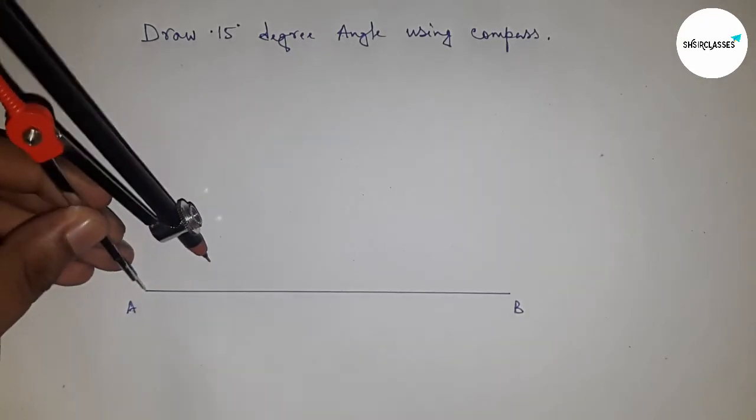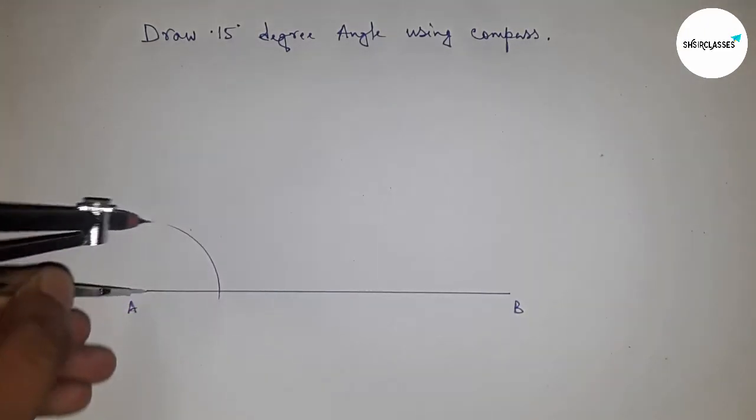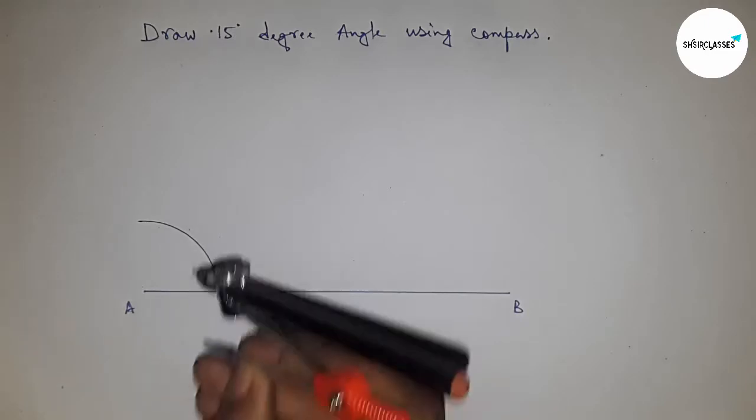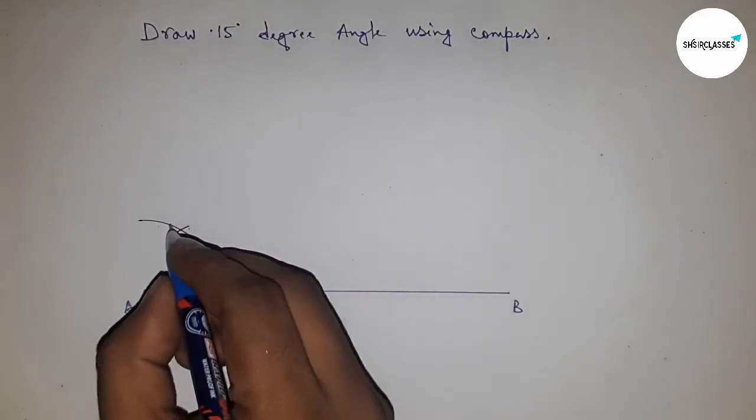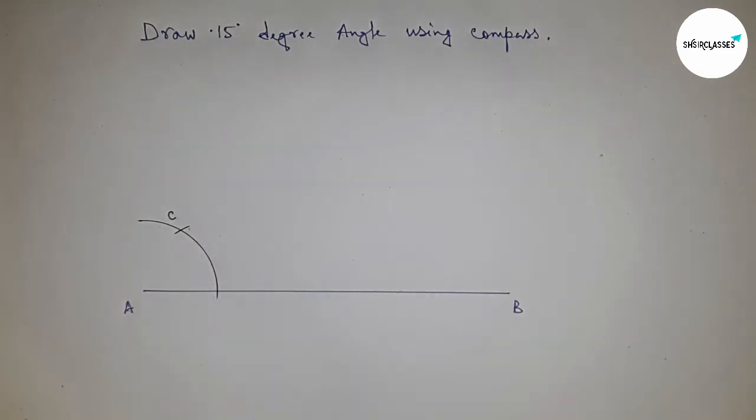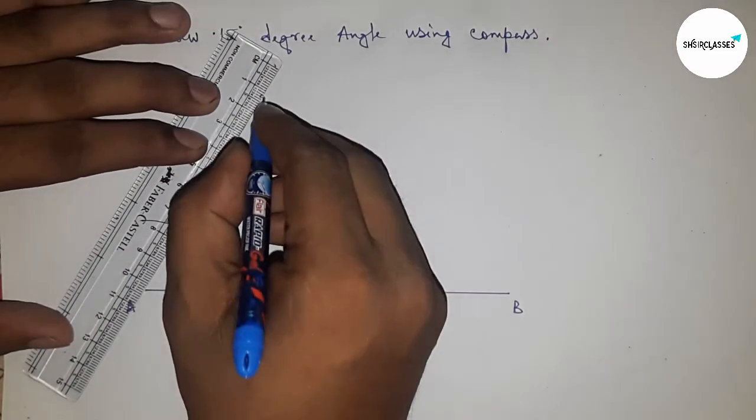Taking any length and put your compass here and drawing an arc with same length and put in the compass here and cut the arc. So this is C point. Next joining A and C to get 60 degree angle.